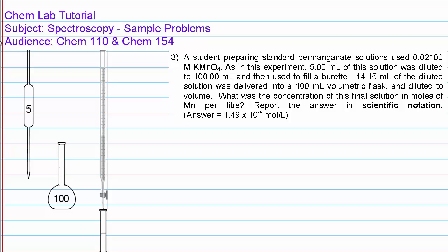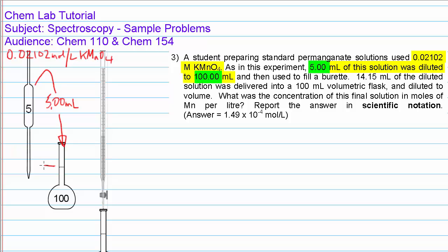Looking at the problem again: we begin with the standard solution of 0.02102 mols per litre of potassium permanganate, and 5.00 millilitres of this is diluted to a total volume of 100.00 millilitres. The precision of these volume measurements tells us we're using high-precision glassware. So the 5.00 millilitres are pipetted into a 100 mL volumetric flask and diluted to the mark with water, ensuring the total volume is precisely 100.00 millilitres.